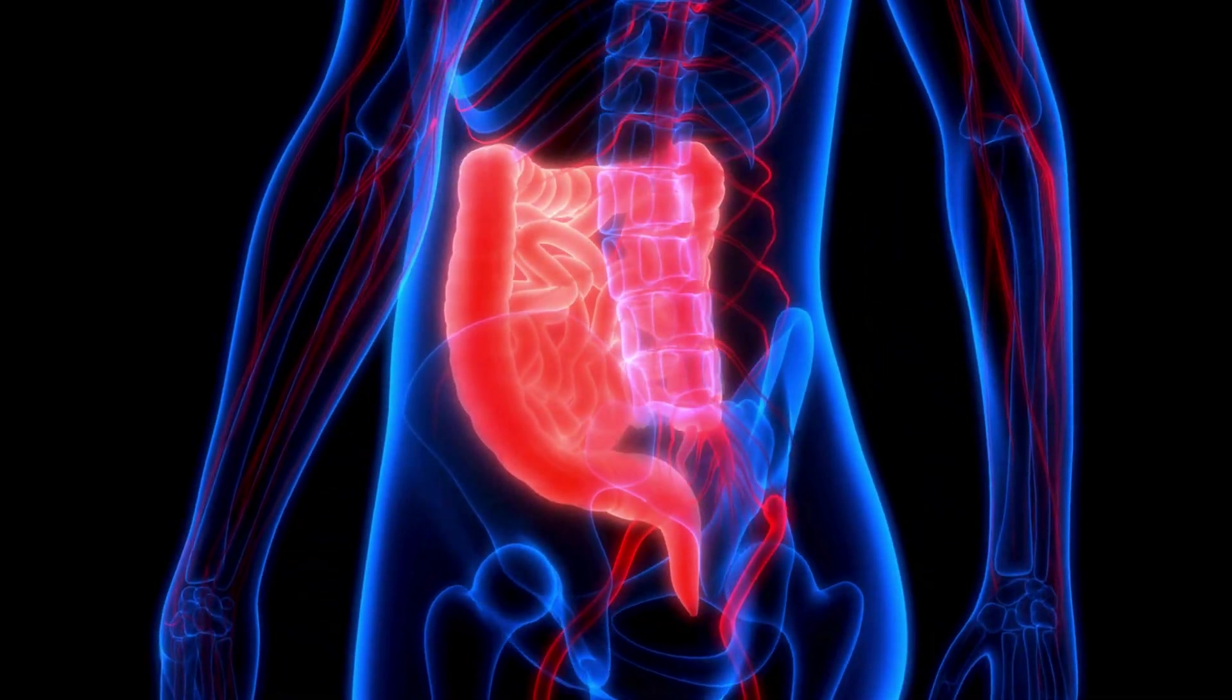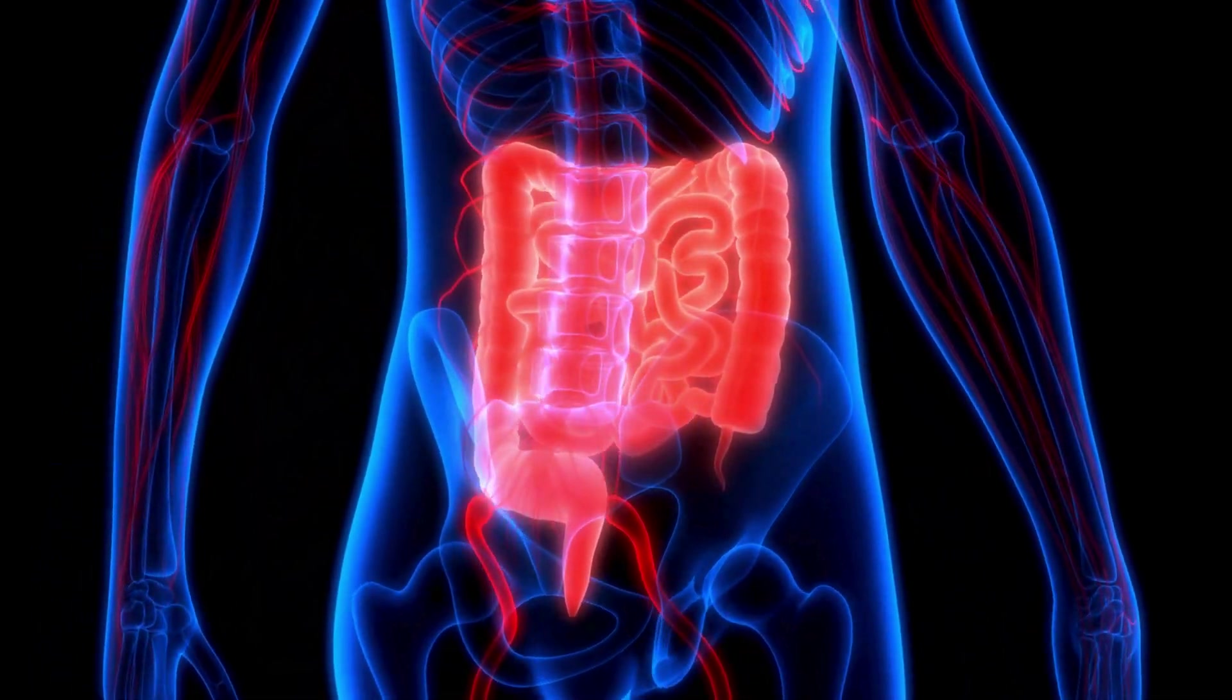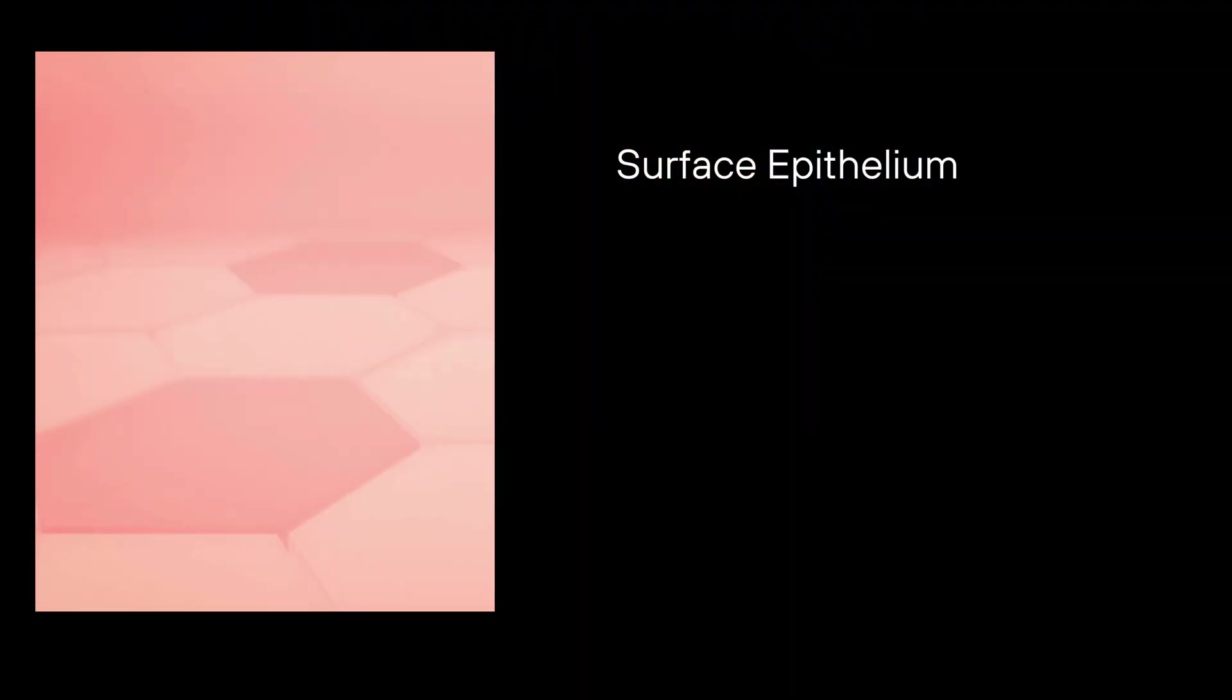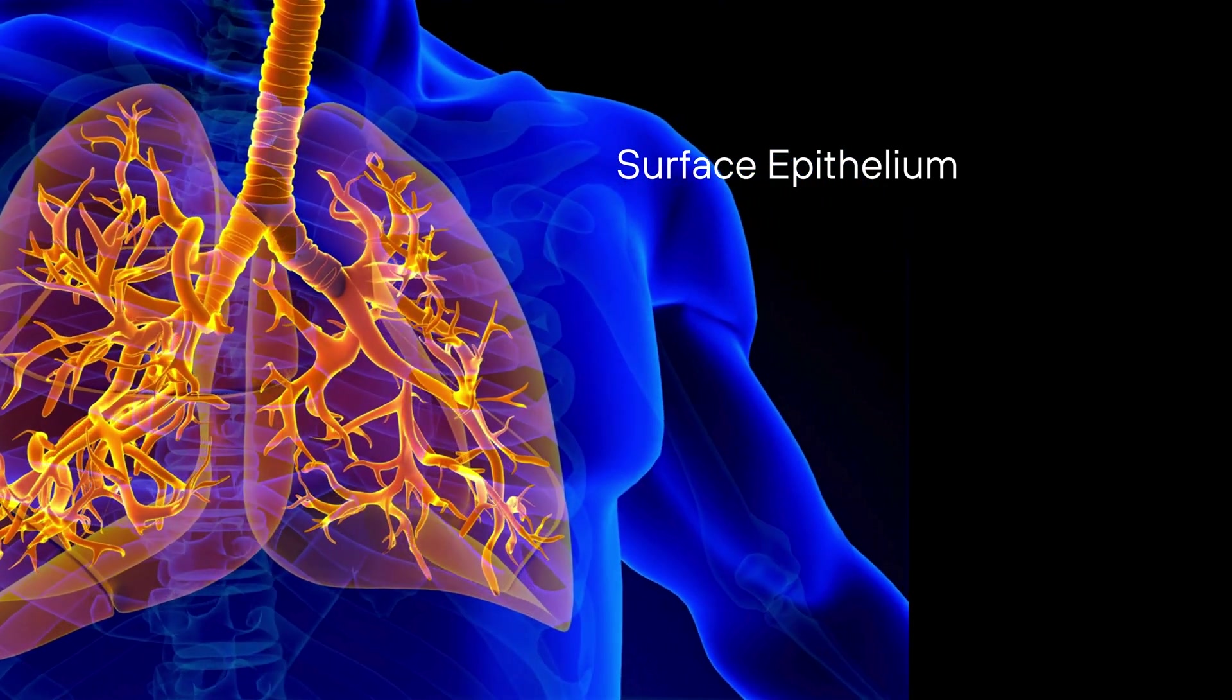There are various types of epithelial tissue, including surface epithelium, which covers the outer skin and the internal surfaces of our organs, such as the digestive tract and the lungs.